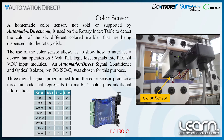Using the color sensor gives us the opportunity to show how to take a device that operates on 5V DC TTL logic level signals and interface it to PLC 24V DC input modules. We chose an AutomationDirect signal conditioner and optical isolator, part number FCISOC, for this task. Three digital signals programmed from the color sensor produce a 3-bit code that represents the marble's color plus some additional information. See the truth table shown here.